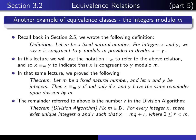Having the same remainder upon division by m refers back to the division algorithm. If we fix a natural number m, then for every integer x, there exist unique integers q and r such that x can be written as mq plus r, where r satisfies the required inequalities. That number r is called the remainder of x upon division by m.